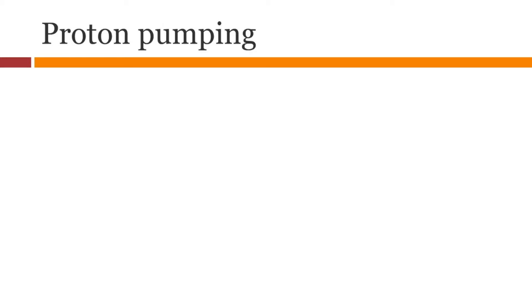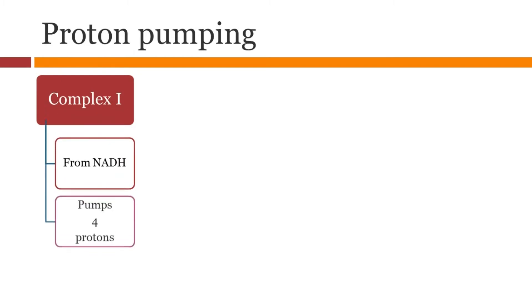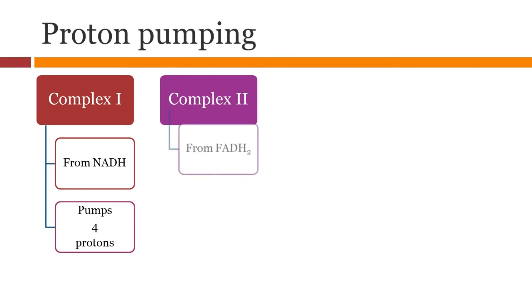NADH and FADH2 are processed differently. NADH goes through complex 1, 3, and 4 whereas FADH2 goes through complex 2, 3, and 4.